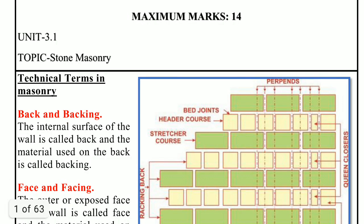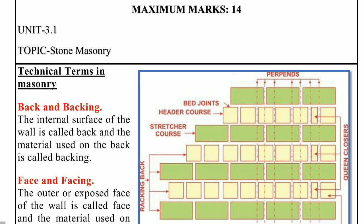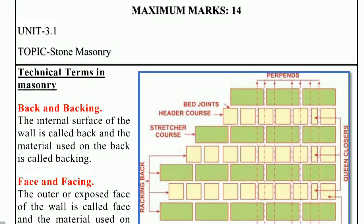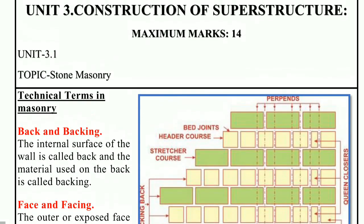In masonry works, if we divide masonry works, we can divide it into two parts. Number 1: stone masonry. Number 2: brick masonry.